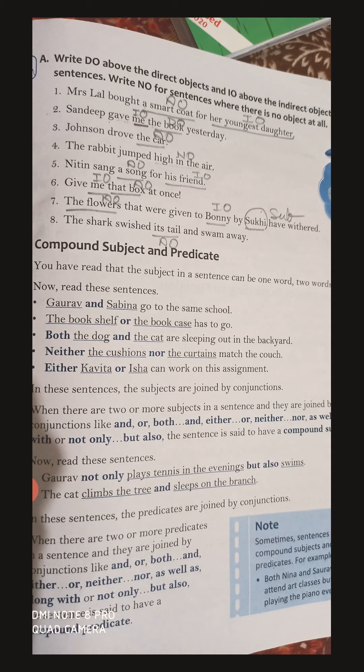Next, sentence five: 'sang' — the direct object is 'a song', which is very easy. And the indirect object is 'his friend', for whom he sang. All are very easy. Sentence number seven I would like to discuss here because this sentence is somewhat complicated.